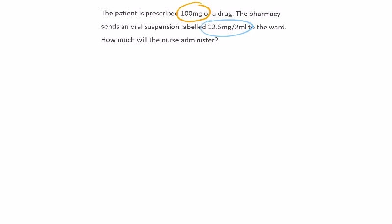We always have to identify our want and our have. Our want is always related to the patient — 'prescribed' is a good word to remind us that's what we want. The have is always the element with two quantities, and that slash really helps to remember that's our have. The have element will be within that ratio.